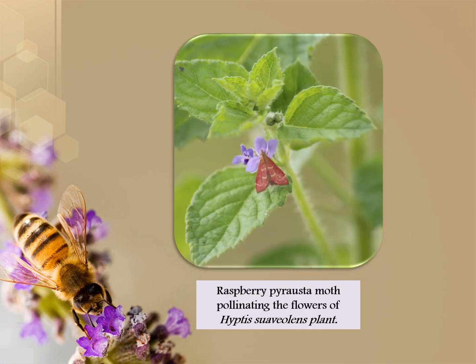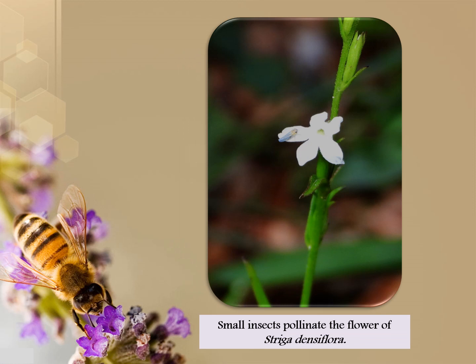Rasberry moth pollinates the flowers of Hyptis suaveolens. A small insect pollinates the flowers of Striga densiflora.